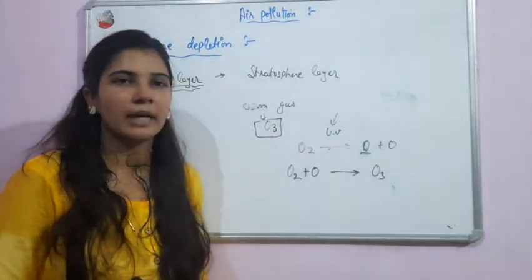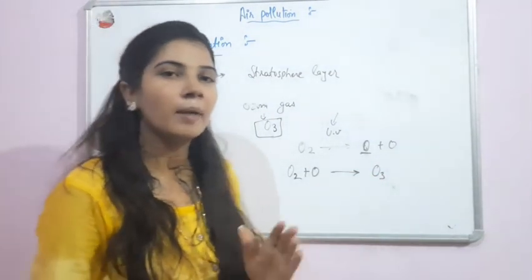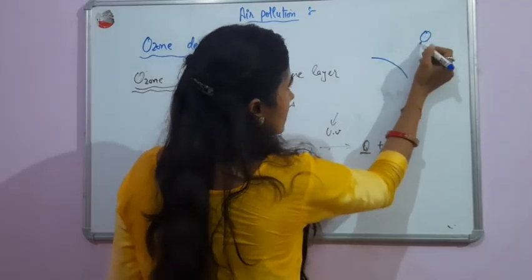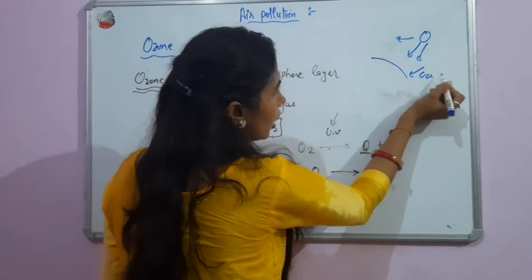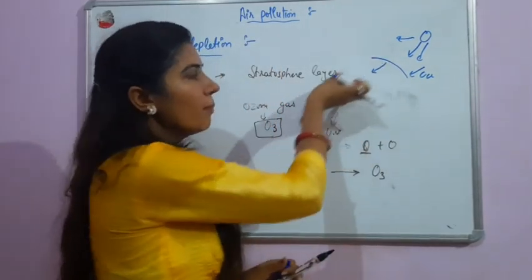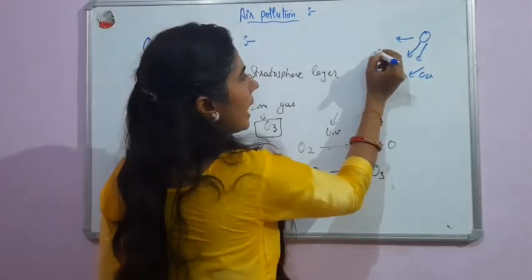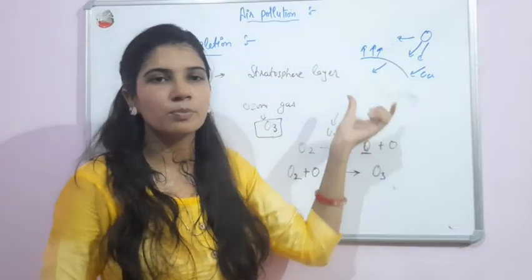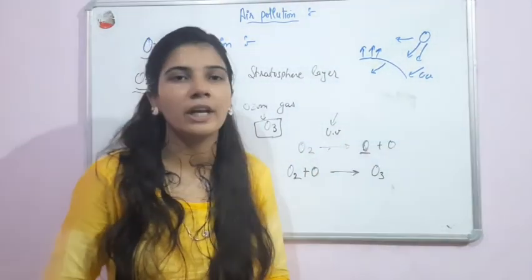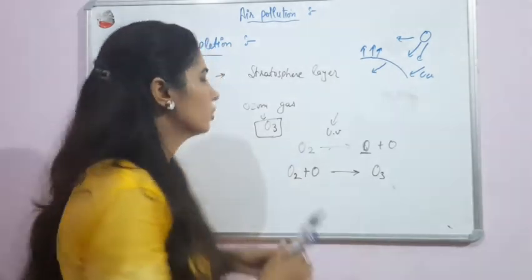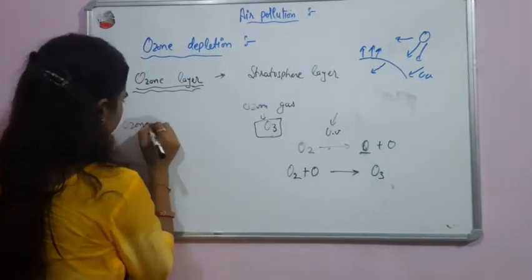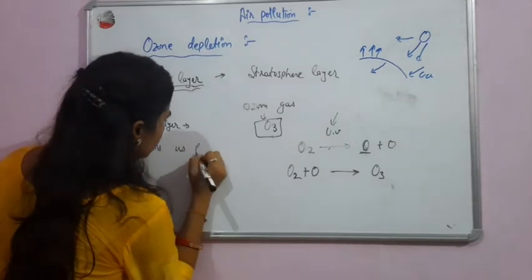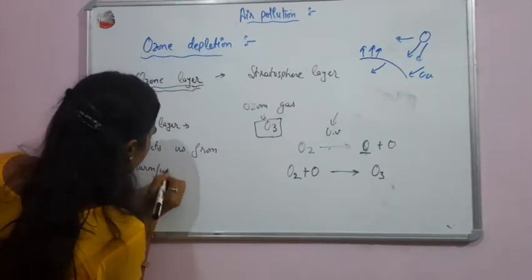The ozone layer is beneficial because when ultraviolet radiations come from the sun, some ultraviolet radiations pass through the ozone layer into the atmosphere, but the remaining ultraviolet radiations are reflected by the ozone layer and do not reach our atmosphere. So the ozone layer protects us from harmful ultraviolet radiations.